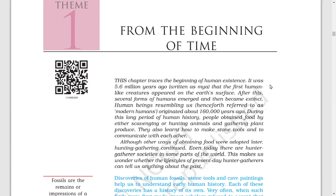All other ways of obtaining food were adopted later. Hunting-gathering continues even today — there are hunter-gatherer societies in some parts of the world. This makes us wonder whether the lifestyle of present-day hunter-gatherers can tell us anything about the past. I will be giving you this information on your Snap homework also.